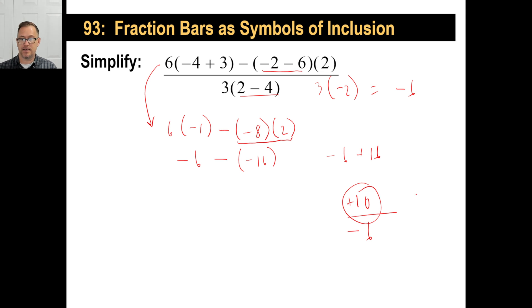you would say this is a positive 10 divided by negative six, which means it's going to be negative. The whole thing will be negative. Just apply that to the entire fraction. Of course, we want to reduce this as well. It's reducible by two. So negative five thirds. There you go. Fraction bars are symbols of inclusion.